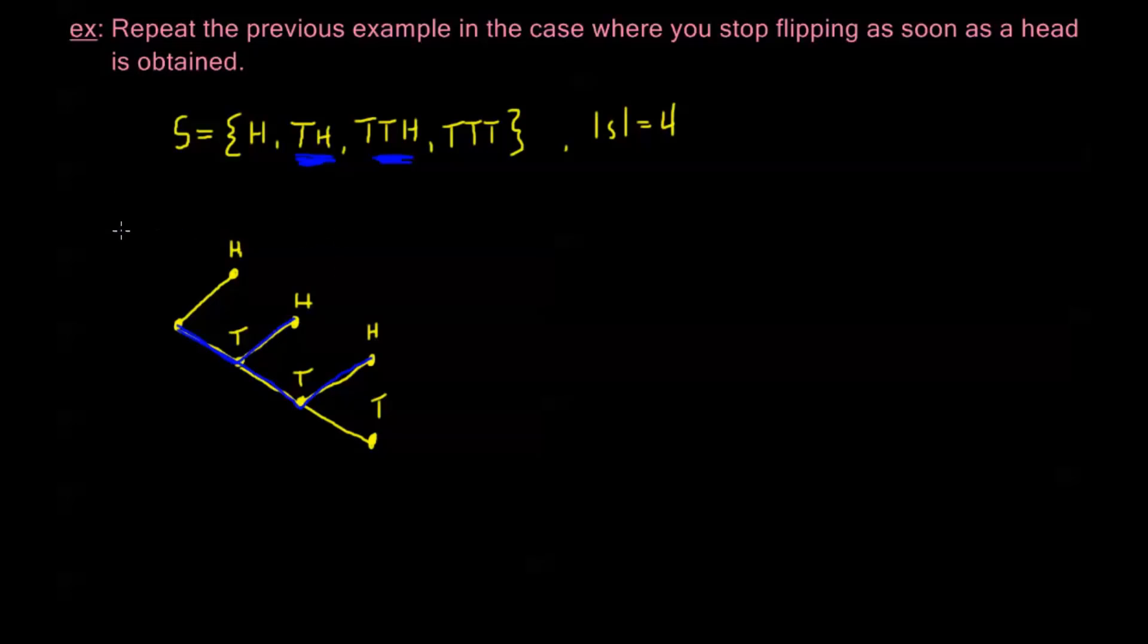Now, in these two examples, we've been flipping coins consecutively. I've been flipping a coin and then recording the result and then flipping a coin and then recording the result. But that's not the only time we can use a tree diagram. We can also use a tree diagram if the events, the simple events are happening or the simple experiments are happening simultaneously.